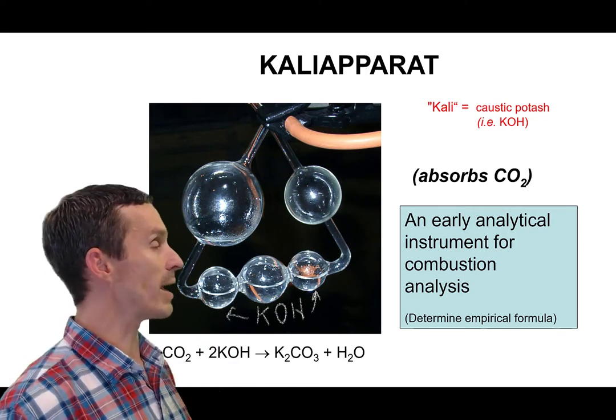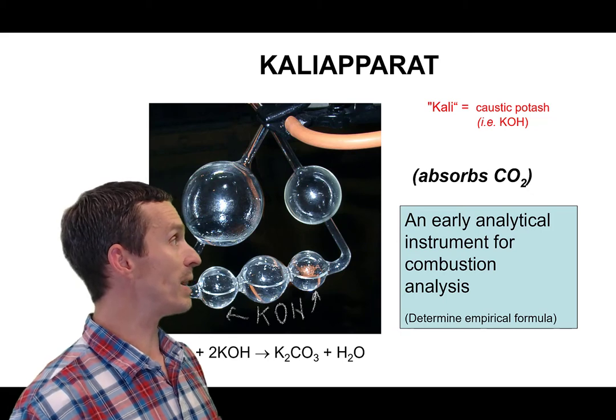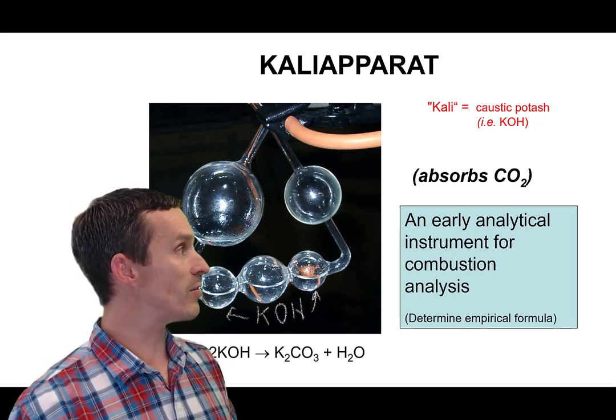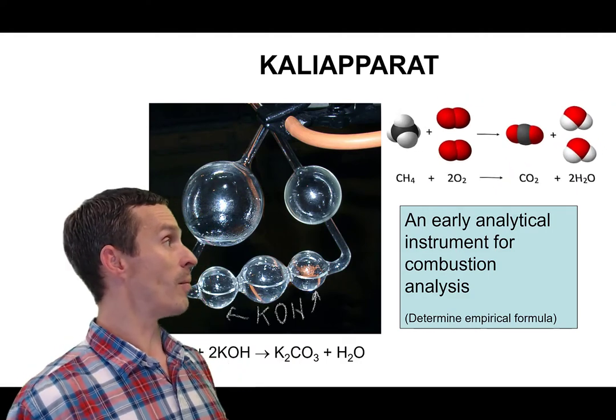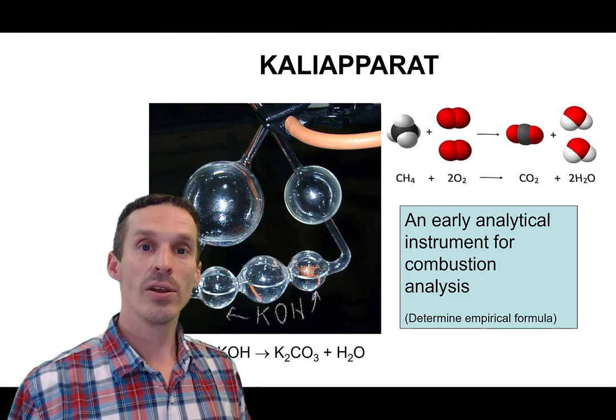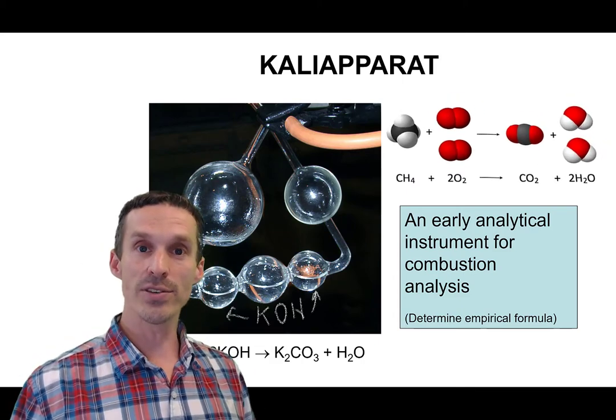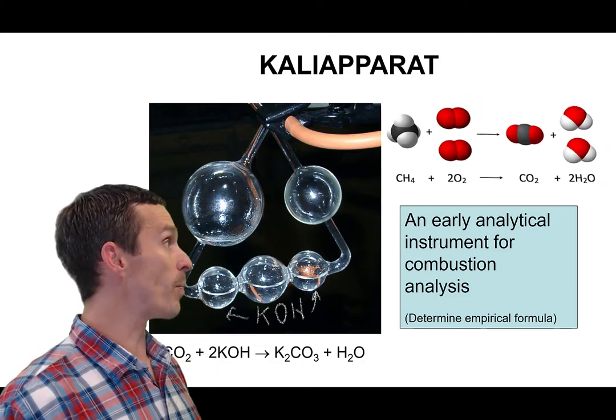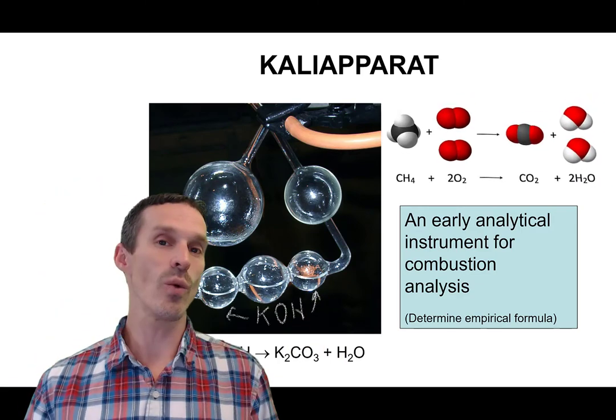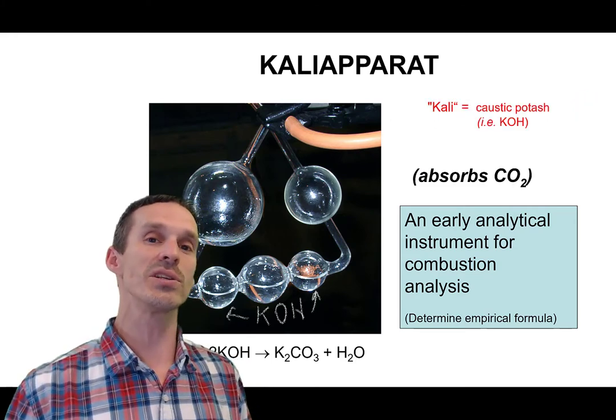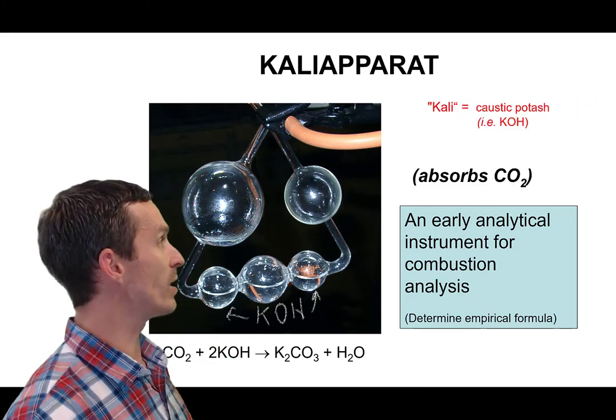So this is the device that we're looking at, it's called a Kaliaparat. And it was a device that was developed by Liebig to assist in the determination of unknowns. So you've probably already learned this before, but if you combust an organic molecule in the presence of oxygen, you're going to produce a certain amount of CO2 and some water. Now the mass of CO2 that's released is going to be proportional to how much carbon we have in our starting compound. But the question comes down, how do you actually weigh that? Well, CO2 is a gas, which means you have to trap that gas.